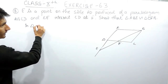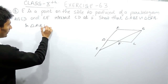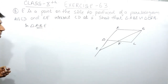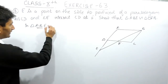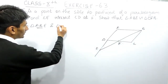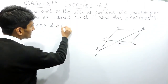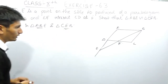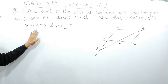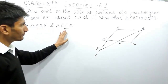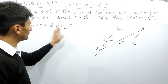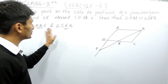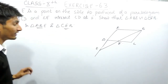To prove that two triangles are similar, you have to prove that two angles in this triangle are equal to two angles in the other triangle. If two angles of these two triangles are equal, then the two triangles will be similar.